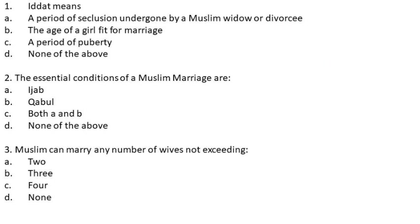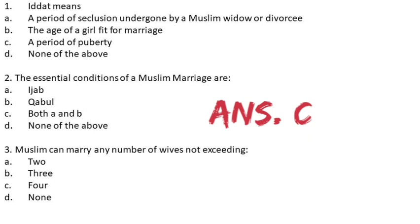Question 2: The essential conditions of a Muslim marriage are — (A) Ijab, (B) Qabul, (C) both A and B, (D) none of the above. The answer is C, both A and B. Proposal and acceptance are both necessary for a Muslim marriage.